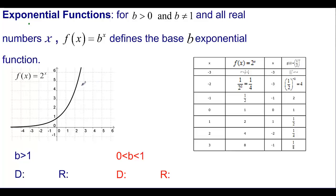I have some examples down here. I have 2 to the x, and in this table you can see that if I take 2 to the negative 3, if you remember your exponent rules, it means 1 over 2 to the third, or one-eighth. And then if I get down to 2 to the zero, it's going to be 1, and so on.